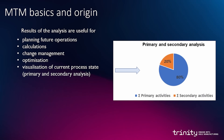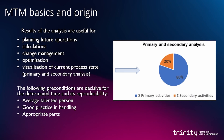The challenge is to minimize secondary effort as much as possible to strengthen the primary effort. The following preconditions are decisive for the determined time and its reproducibility: an average talent person — not the fastest and not the slowest; good practice and handling, meaning the worker should be trained and not doing it for the first time; and appropriate parts, meaning parts should fit without damages or dimensional deviations. It is very important that the operator is trained in MTM because there are many rules to be observed when using MTM.